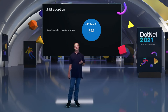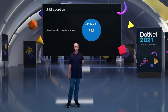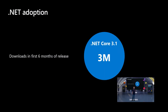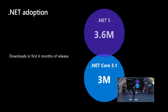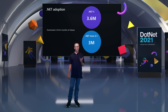We solved that by making it side-by-side. You can now install multiple copies of .NET on the same computer and they will not interfere with each other. Because of this, we're seeing developers move to newer versions of .NET faster than ever before. Three million people in the first six months of .NET Core 3.1 moved to it. And .NET 5 was even faster — in the first six months, over 3.6 million people started using .NET 5.